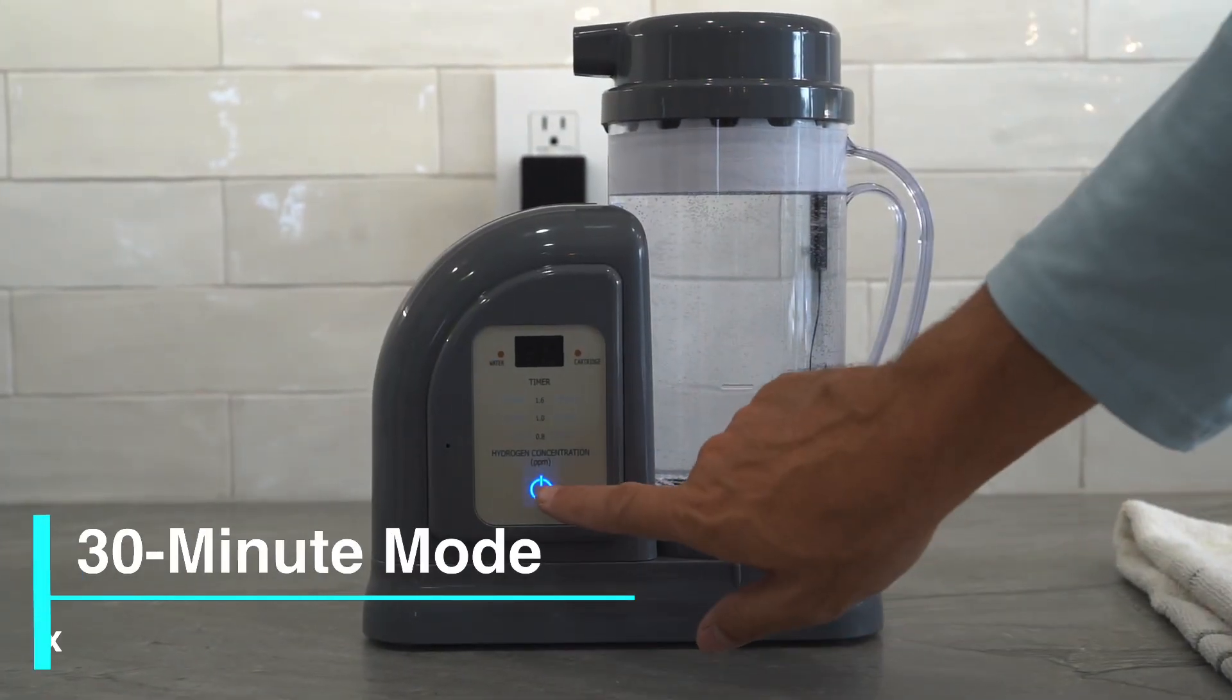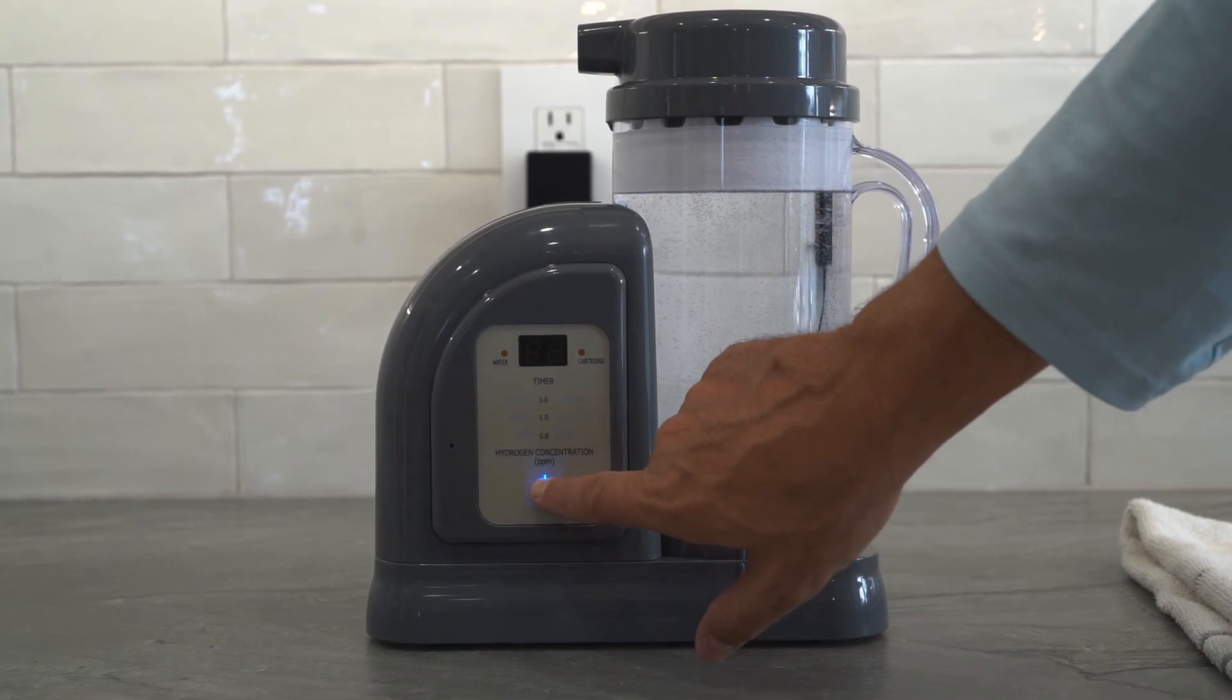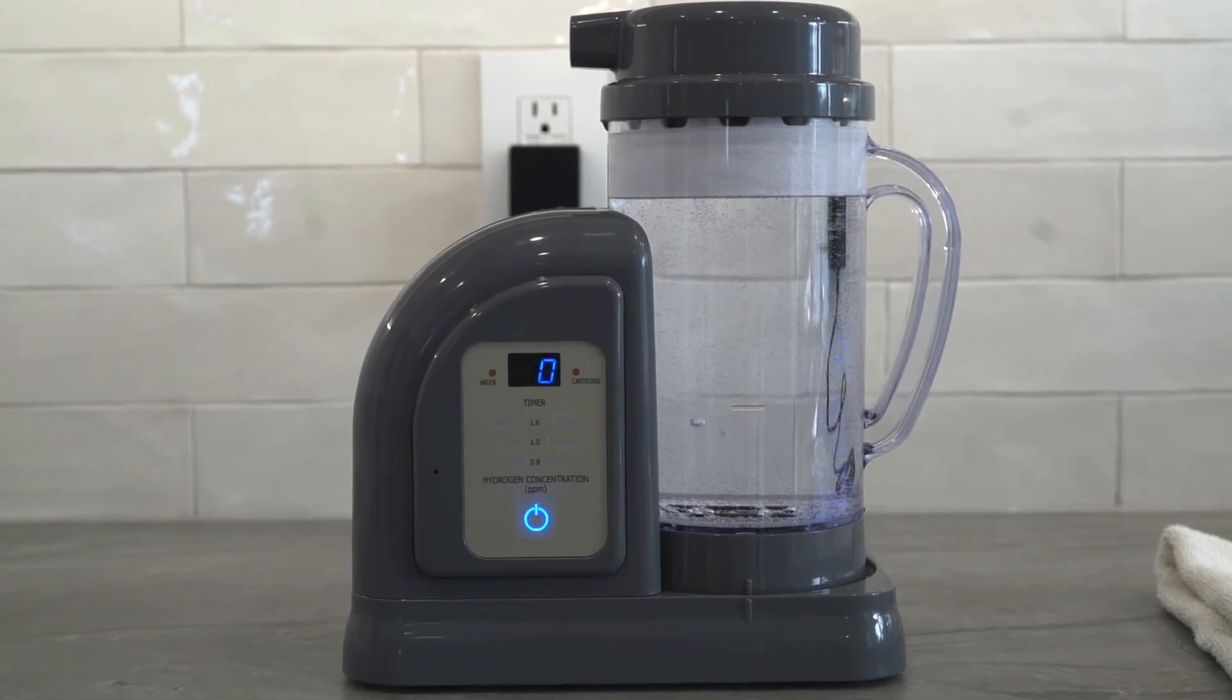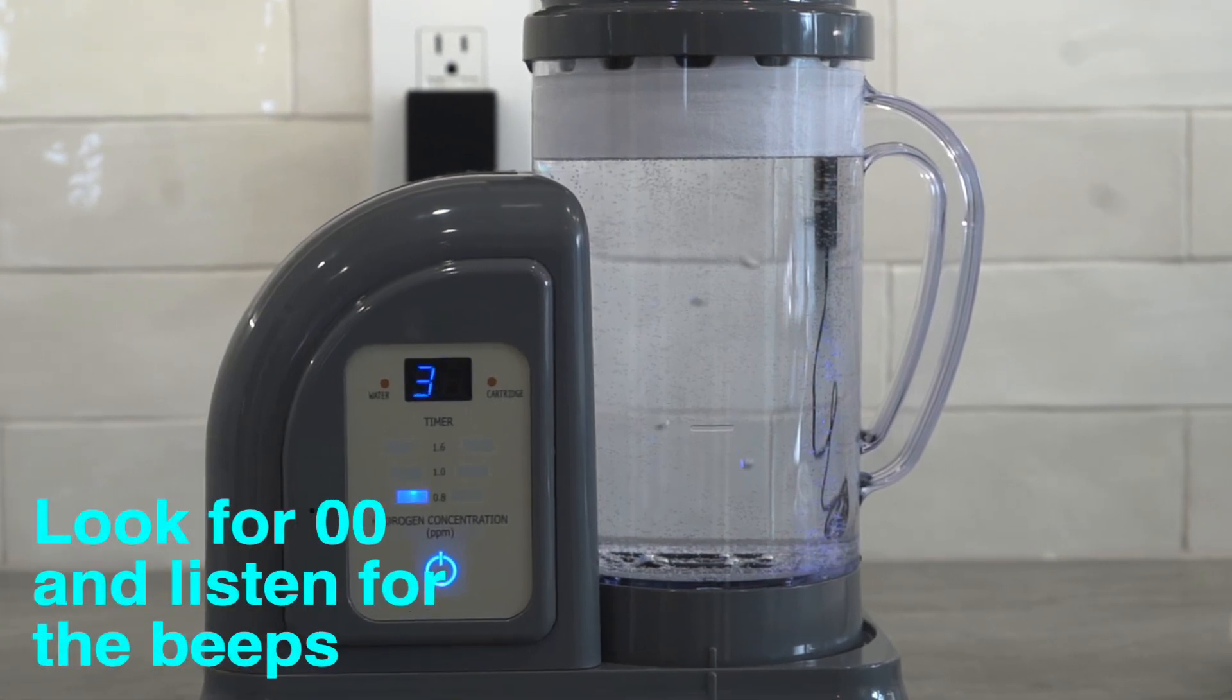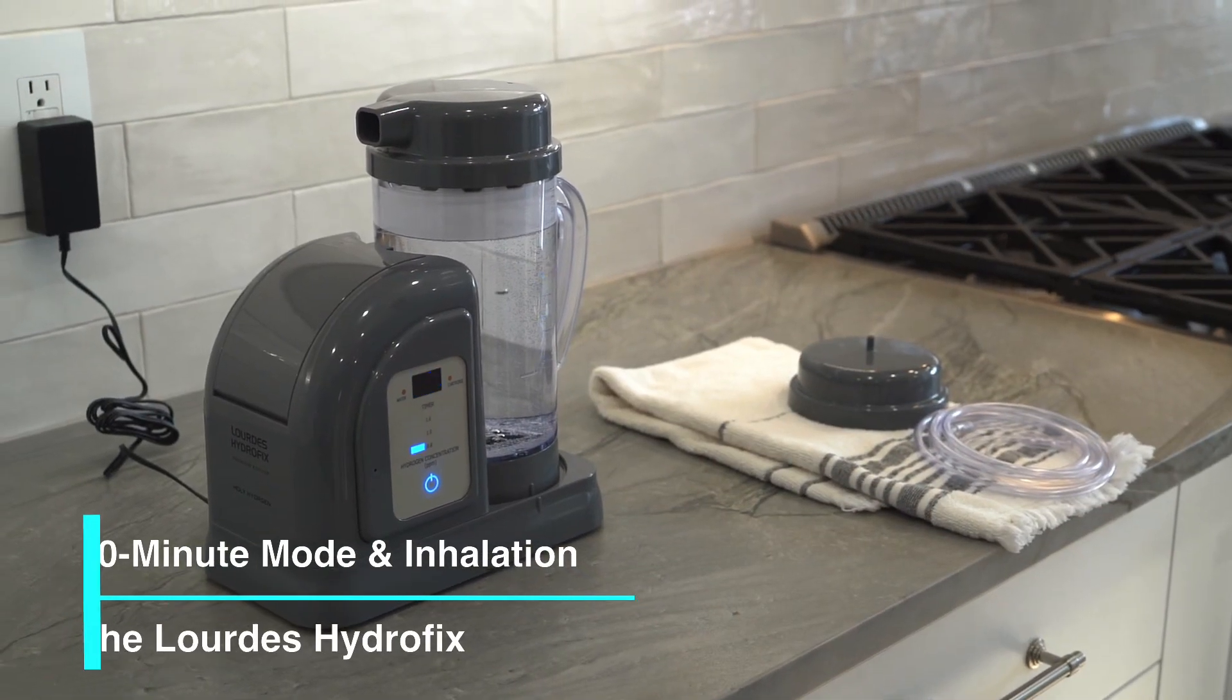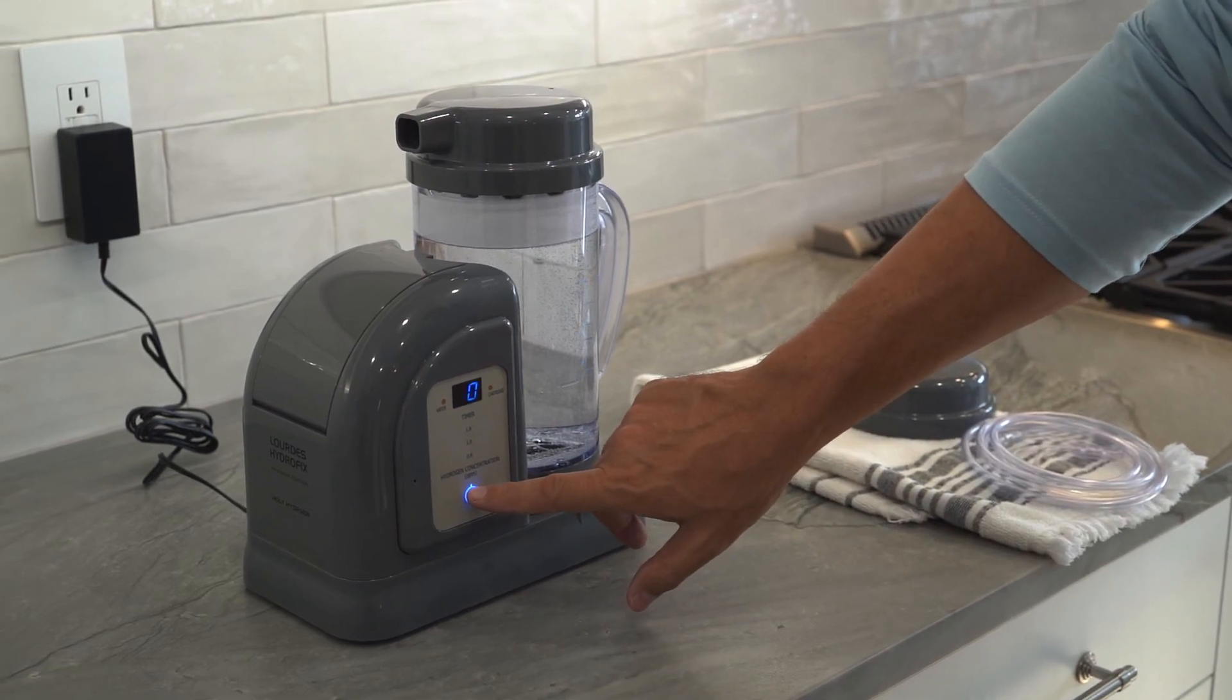30-minute mode. To enter the 30-minute mode, press the power button once. You will hear a beep, the timer will show 30, and the hydrogen concentration bar will blink to indicate the approximate hydrogen level during the production mode. The water will be fully saturated with hydrogen when the timer displays 00 and you hear the beeps. Use the 30-minute mode to make a full pitcher, or 1.5 liters of hydrogen water, or to inhale hydrogen gas for 30 minutes.